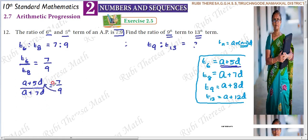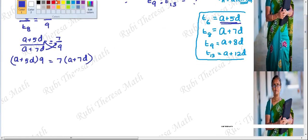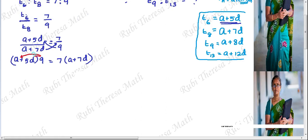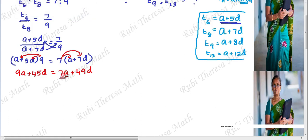Substitute: T6 is a plus 5d, T8 is a plus 7d, and that equals 7 by 9. Cross-multiply: 9 times (a plus 5d) equals 7 times (a plus 7d). Expanding: 9a plus 45d equals 7a plus 49d.